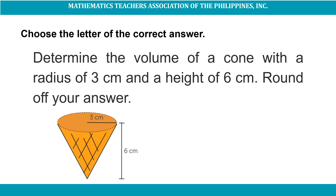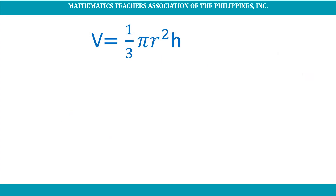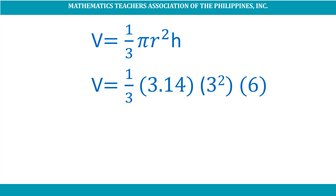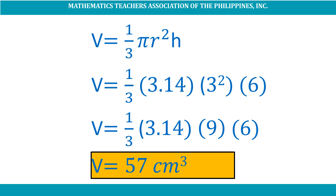Get ready for the next problem. Determine the volume of a cone with a radius of 3 centimeters and a height of 6 centimeters. Round off your answer. A. 55 cubic centimeters. B. 56 cubic centimeters. C. 57 cubic centimeters. Correct! The answer is C, 57 cubic centimeters. Using V = (1/3)πr²h: V = (1/3) × 3.14 × 3² × 6 = (1/3) × 3.14 × 9 × 6 = 57 cubic centimeters.